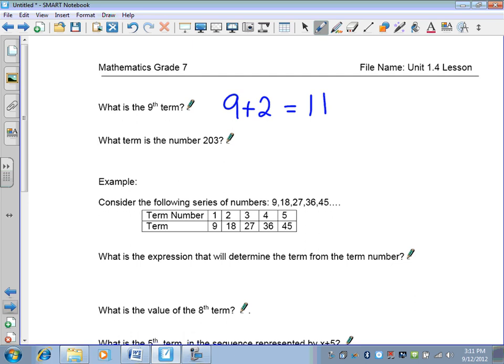Now this next question is actually reversing itself. You want us to know what term is the number 2003? So, no, it's the same thing. So it's 203 plus two is equal to 205.